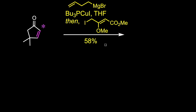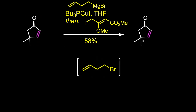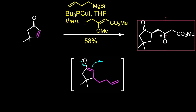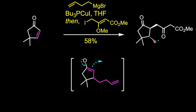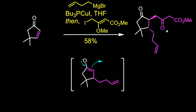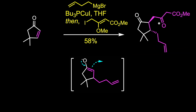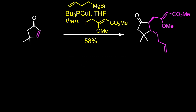Addition of the enone to a solution of the Grignard reagent, which was prepared from 4-bromobutyne, followed by alkylation of the regiospecifically generated enolate with 4-iodo-3-methoxycrotonate produced the desired ketone in 58% yield.